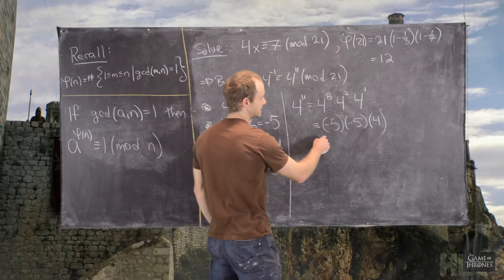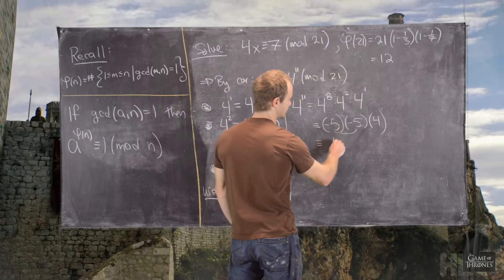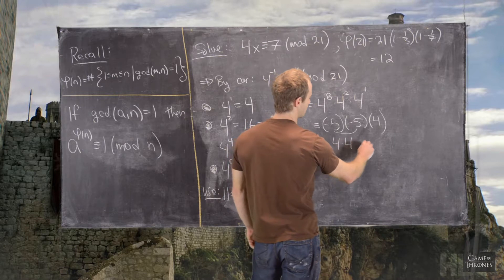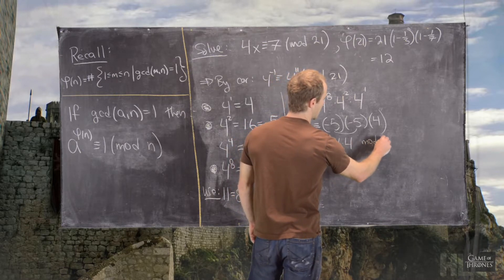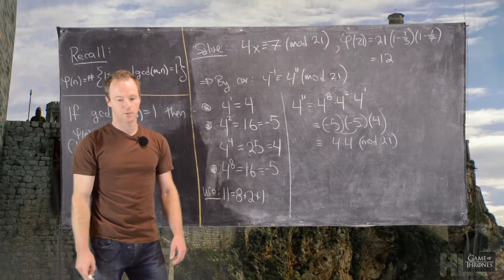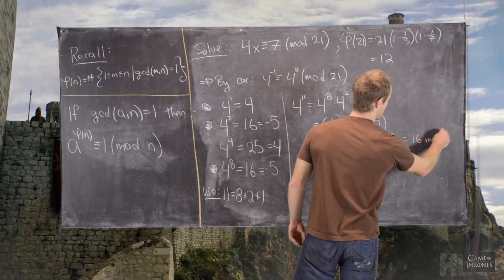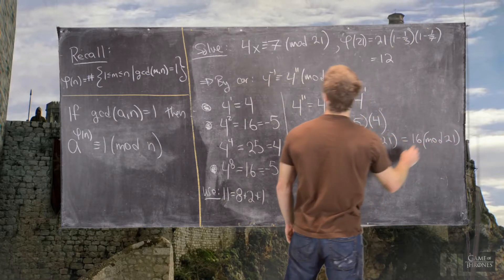So, this is congruent to, so this is 25, which we said was 4 times 4 mod 21. But then, 4 times 4 is 16. So, that means this is equal to 16 mod 21. Great.